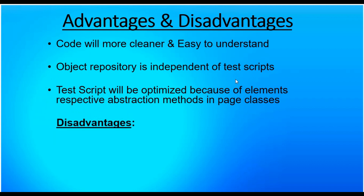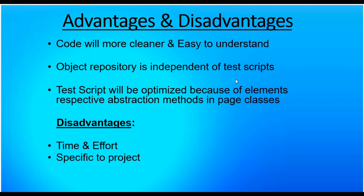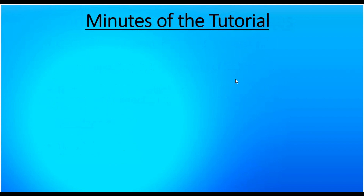The disadvantages of using the Page Object Model: the first is time and effort — you will spend a lot of time creating page classes because you have to identify the web page elements and implement abstraction methods, which is time-consuming. The second disadvantage is that it is specific to the project — if I have implemented the Page Object Model in one project, I can't use the same code in another project.